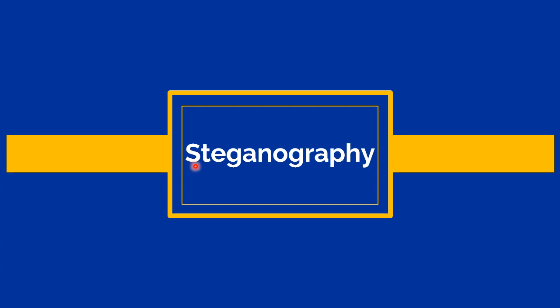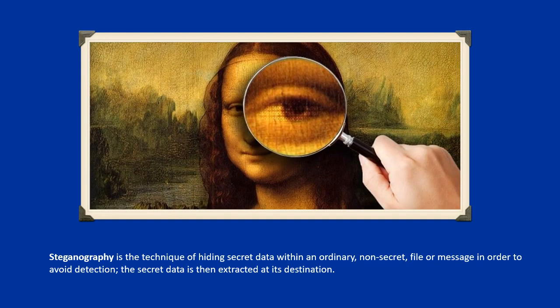Next, let's go to steganography. Steganography is the technique of hiding secret data within an ordinary, non-secret file or message in order to avoid detection. The secret data is then extracted at its destination. Let's watch the following video on how to hide data inside an image.